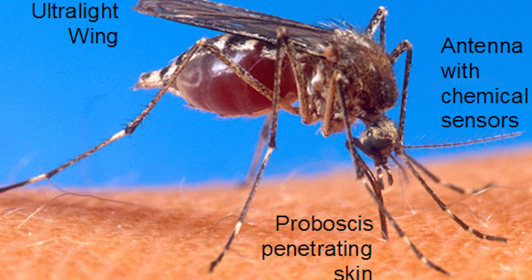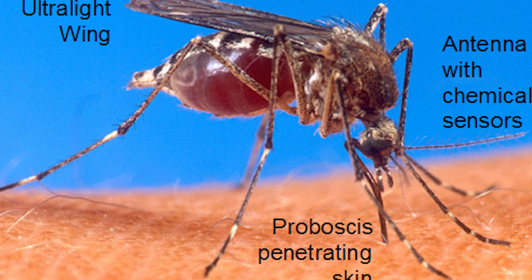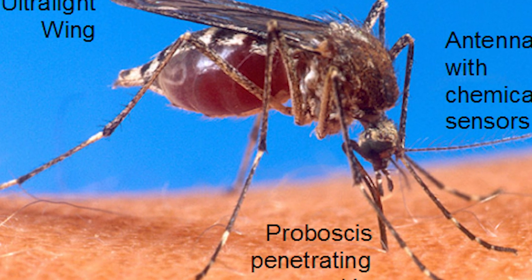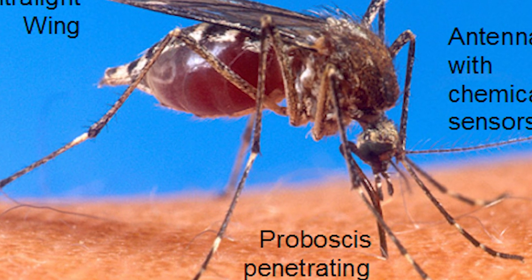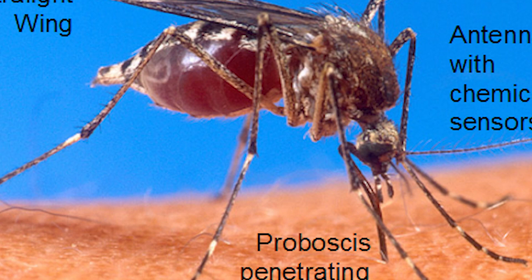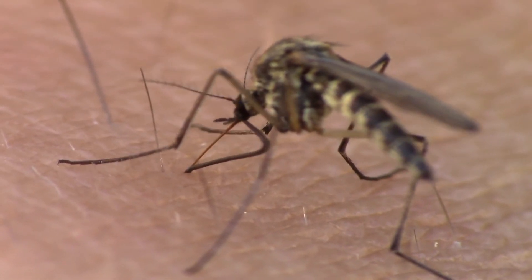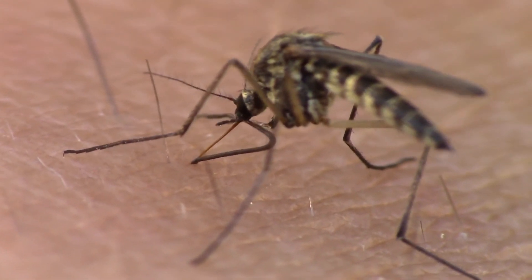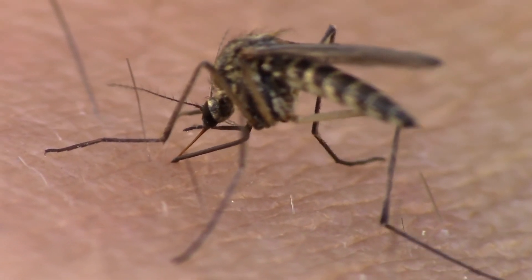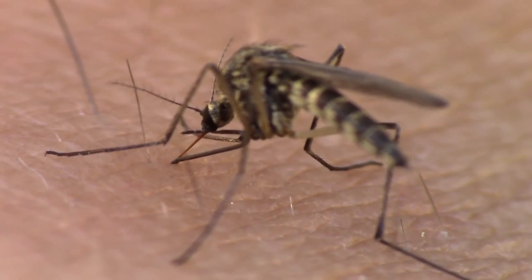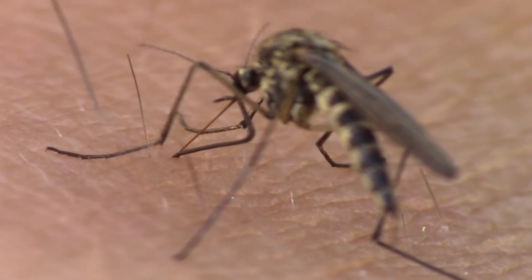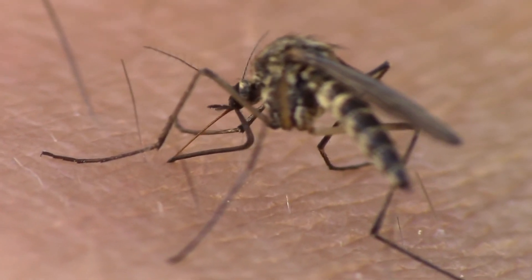Upon landing on its victim's skin, the mosquito uses specialized sensors located at the tip of its proboscis to locate a suitable blood vessel. These sensors can detect changes in temperature, detect vibrations caused by blood flow, and even sense chemicals released by the blood vessels themselves. Once a blood vessel is located, the mosquito's proboscis is inserted into the skin and the blood feeding process begins.